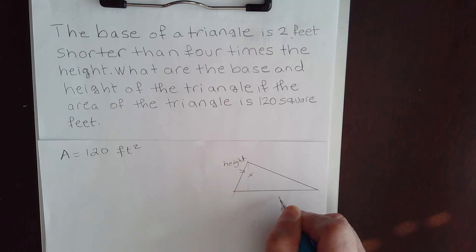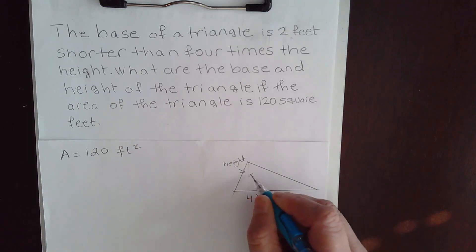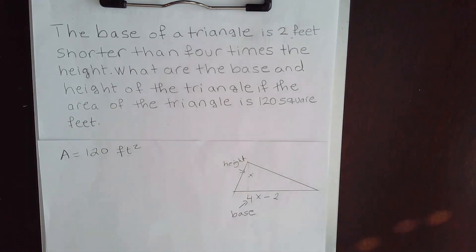And that is 2 feet shorter than 4 times the height. 2 feet shorter means 2 feet less. So 2 feet less than 4 times the height. What is the height? I just called it X. So this is the height and this is your base. So I have one in terms of the other. They're both in terms of X.